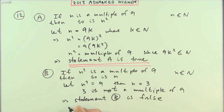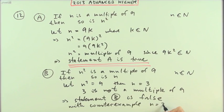Now I'll just put this wee note in. With counterexample, with counterexample, n equals 3.